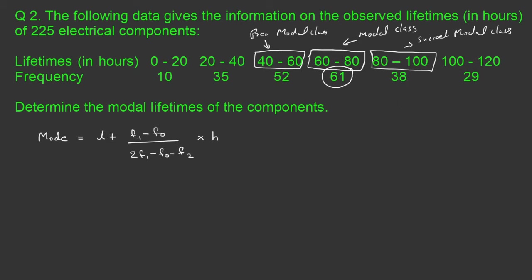Now I need to find the values of L, F1, F0, F2, and H. From the data, L is the lower limit of the modal class, which is 60. F1, the frequency of the modal class, is 61. F0, the frequency of the class preceding the modal class, is 52. F2, the frequency of the class succeeding the modal class, is 38. H is the class width; I can calculate it as 20 minus 0, which is 20, and all class widths are equal.